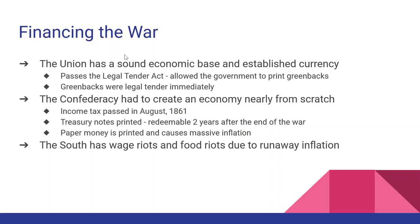Some political developments: financing the war doesn't go well for the South. They print treasury notes that aren't really worth anything — essentially IOUs that would only become valuable if they won the war. The Union passes the Legal Tender Act, authorizing the creation and printing of dollar bills known as greenbacks, which were legal tender and could be spent right away. Because of financial insecurity, the South experiences food riots, runaway inflation, and a very bad financial situation overall.